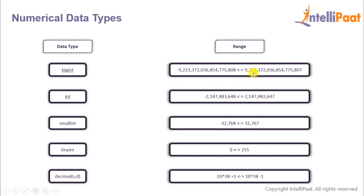Then we have the INT data type which helps us to store reasonably big values. After that we have the SMALLINT data type, and the range of SMALLINT is from minus 32,768 to 32,767. Then there's TINYINT, and the range is only between 0 to 255.